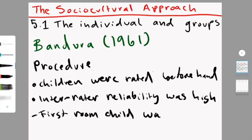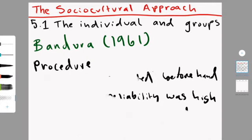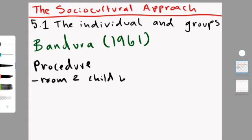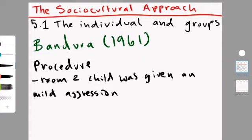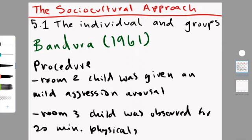Then the child was first put in a room where they watched a model do either non-aggressive or aggressive things, or no model, depending if they were in the condition group. Then they were moved to another room where they were given a mild aggression arousal. So essentially, they were taken to a room with really attractive toys, if you will. But the researcher let them start playing with it, and then the child was basically told that these toys are actually for a different child, so you can't actually play in here. So, you know, they did something to sort of take the child off, essentially. Then they moved them into the third room, where they were alone for 20 minutes with these toys. And then, every five seconds, the researchers wrote down what the child was doing. So a lot of data from this experiment.